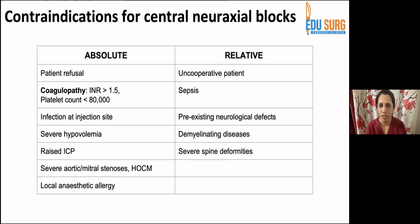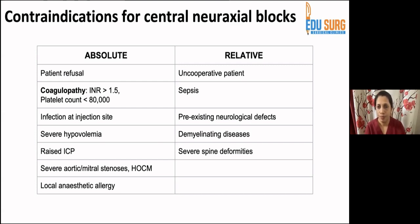Relative contraindications include: uncooperative or mentally unstable patients, for whom regional anesthesia as a sole technique is extremely difficult — operating in a moving patient is nearly impossible. Sepsis is also a relative contraindication because it can lead to foci of infection in the spine or introduce infection into the CSF through blocks.